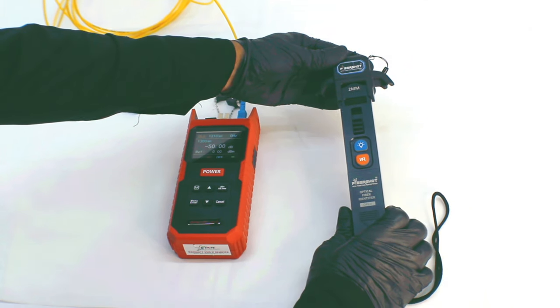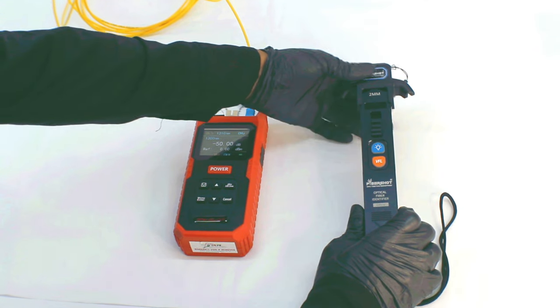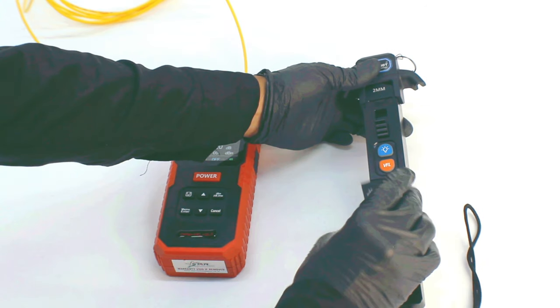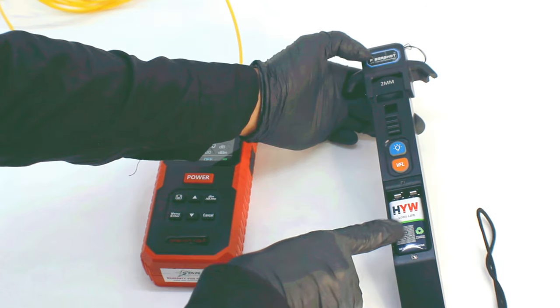Now we will check the performance of the FibreShot Optical Fibre Identifier. Here, as you can see, the power source of this identifier is a 9V battery.